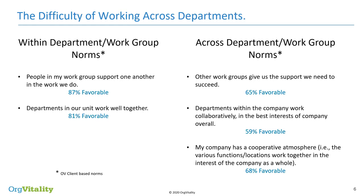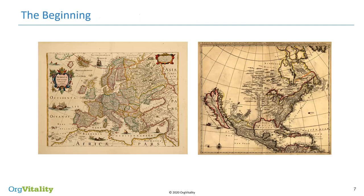Even in the best of companies — and these are norms from across hundreds of organizations — it's easier not to be multilateral, not to work across departments or bring in different groups to achieve common company goals. It's not that it's not happening; it's just more difficult than being more insular and working within a group. That's the discrepancy we see in the normative data. So what are the origins of multilateralism? Where did this idea that different groups have to work together come from?